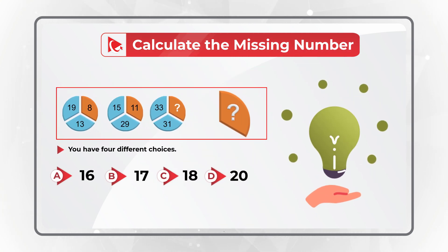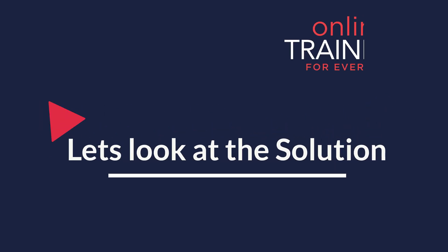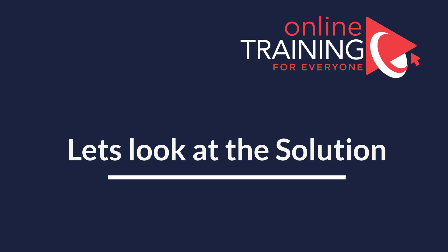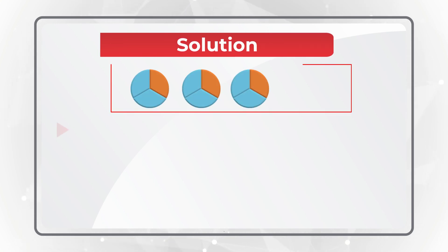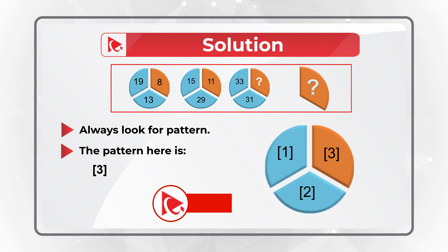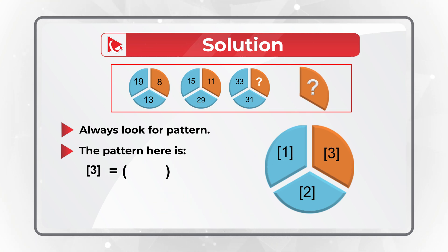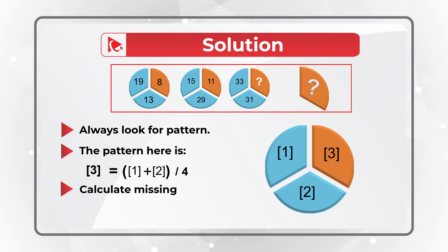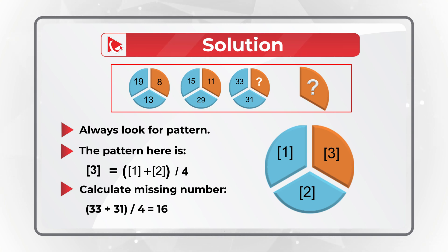The solution to this problem is really interesting. You need to always look for patterns. The pattern here is that section 3 of the circle is calculated as sections 1 plus 2, divided by 4. So to calculate the missing number, add 33 plus 31, then divide the sum by 4, and you will get the result, which is 16.